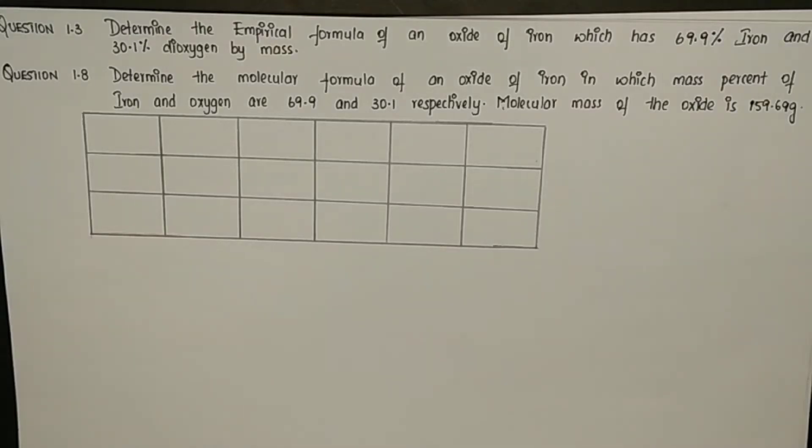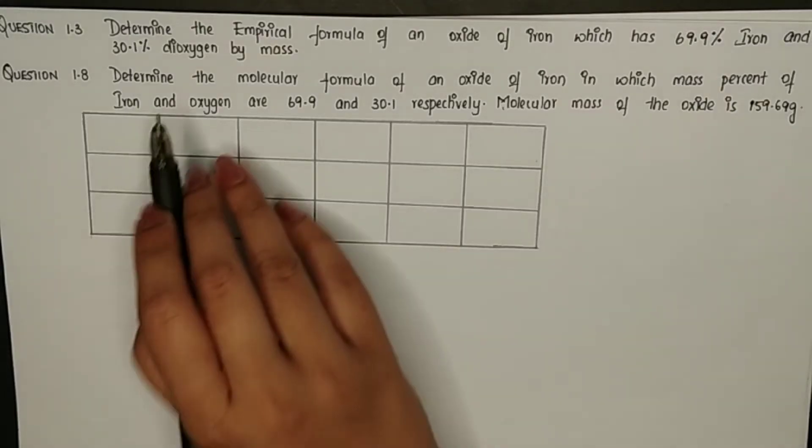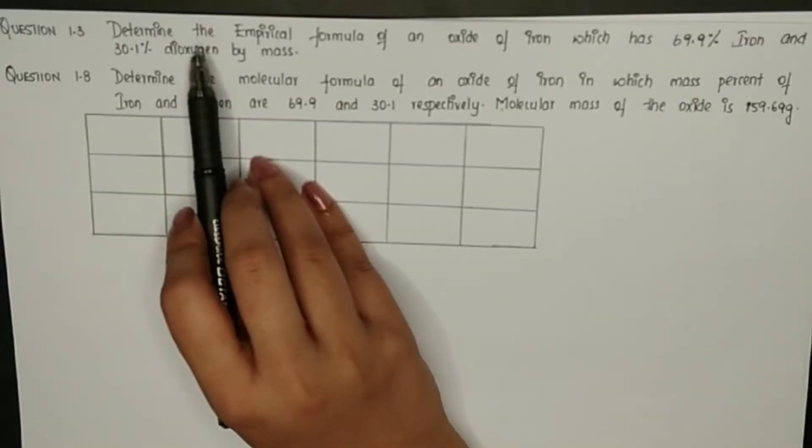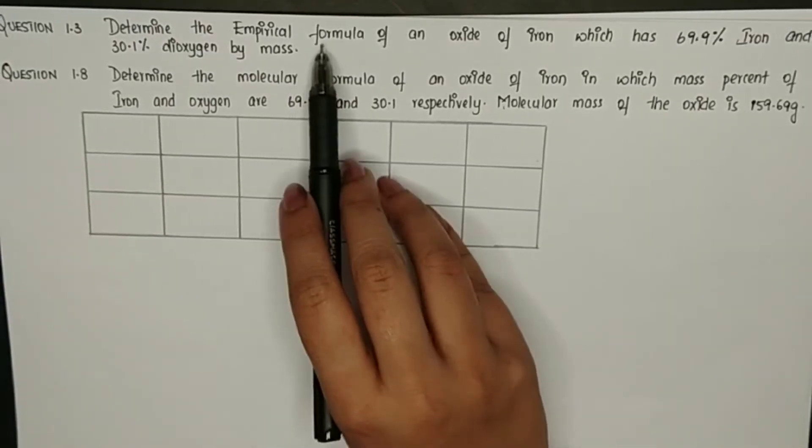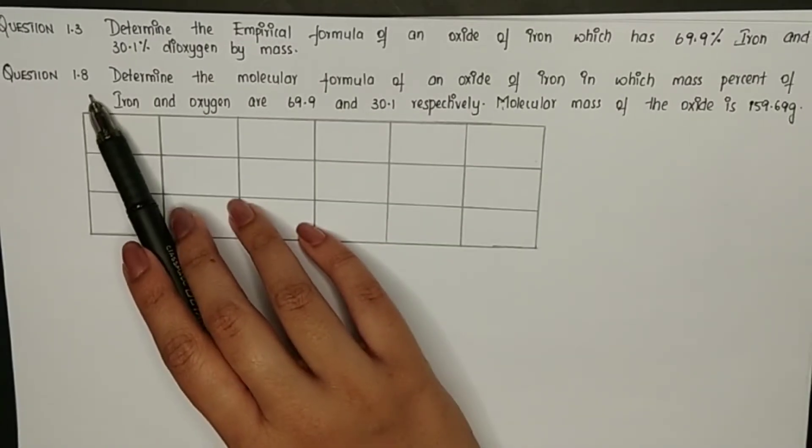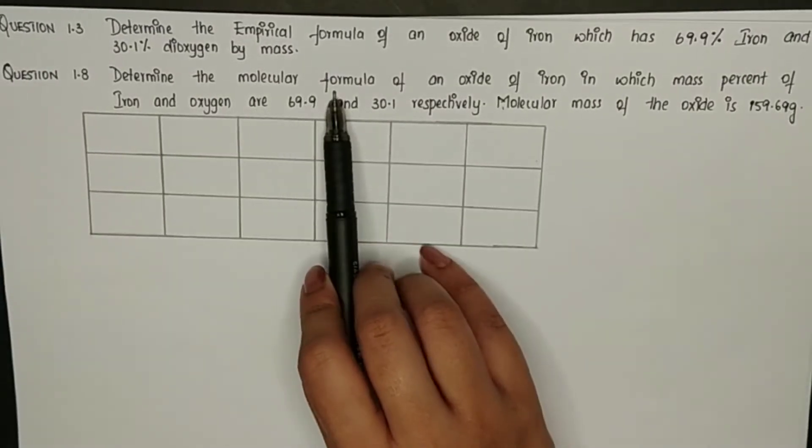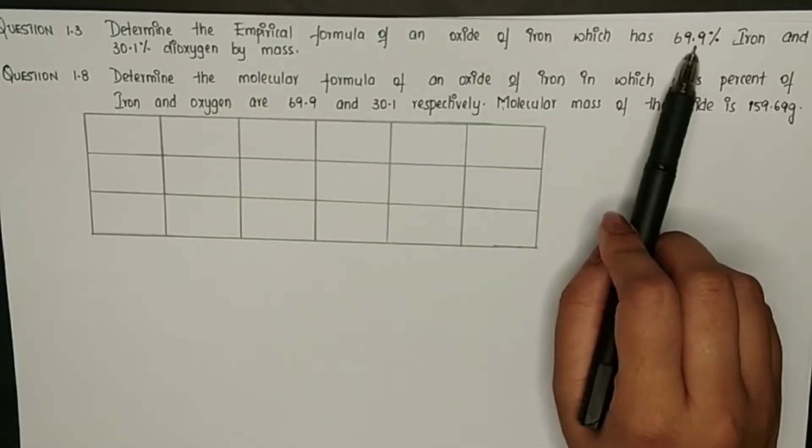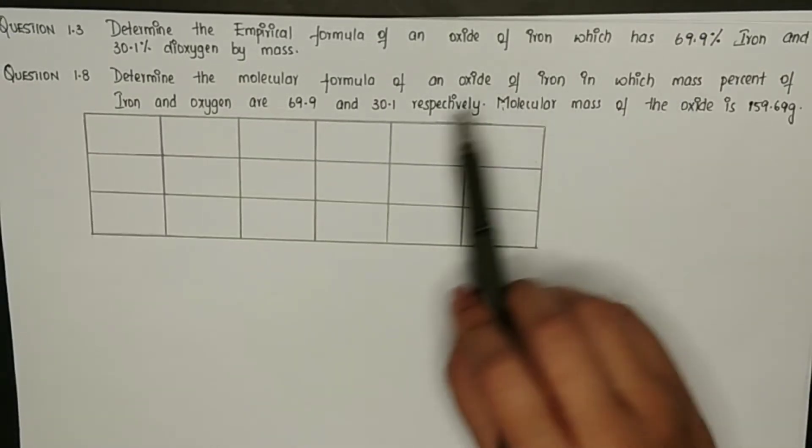Students, question number 1.3 and 1.8 are similar. In question 1.3 they have asked to determine the empirical formula whereas in question 1.8 determination of molecular formula is asked. But the element and the percentage are the same, so we will solve this together.